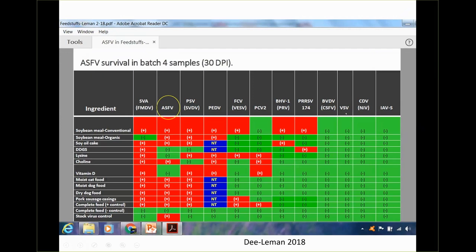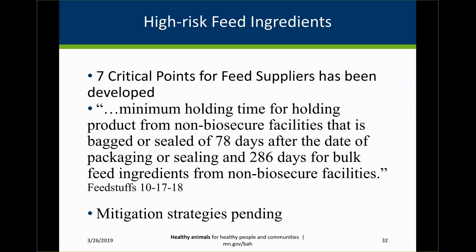African Swine Fever can also survive in feed ingredients imported across the ocean. Many different products can enable the virus to survive that journey, based on simulated research conducted by Dr. D and teams at South Dakota State and Kansas State University. African Swine Fever virus has even survived the journey in a shipping container without any substrate. This has led feed suppliers to develop seven critical control points to minimize infection risk, with holding periods established at 78 days for non-secure facilities with bagged feed, and up to 286 days for bulk ingredients. Additional mitigation strategies are also being developed.